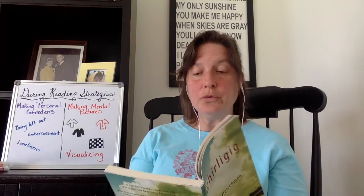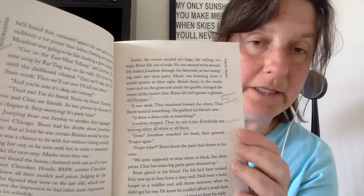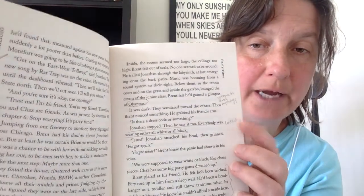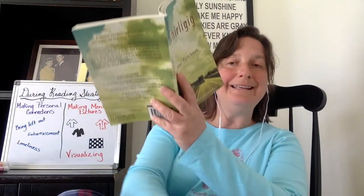It was dusk. They wandered toward the others. Then Brent noticed something, grabbed his friend's arm. "Is there a dress code or something?" Jonathan stopped. Then he saw it too. Everybody was wearing either all white or all black. Please take a moment and on page nine, lightly underline where it says: "Jonathan stopped. Then he saw it too. Everybody was wearing either all white or all black." Just note "conflict" again — we are going to return to those in before reading session three.